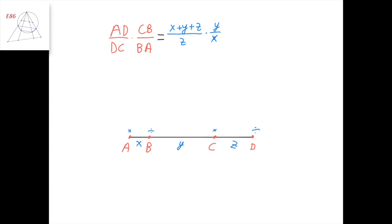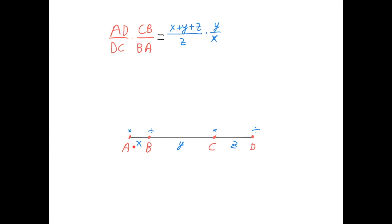Previously, we've discussed the cross-ratio. It's when we have four points on a straight line. The cross-ratio is defined as AD divided by DC times CB divided by BA. If we label the lengths of the segments AB, BC, and CD as X, Y, and Z, it's equivalent to X plus Y plus Z divided by Z times Y divided by X. You can also use the mnemonic where you put multiplication and division signs at the four points, start at point A, and go around until you come right back to where you started, meaning the cross-ratio is complete.